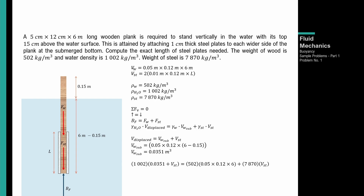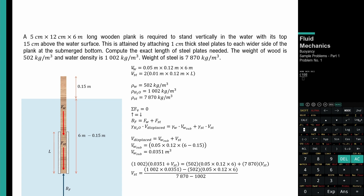Substitute natin. Yung mga unit weight ay rho times g. Lahat naman ng terms may acceleration due to gravity, so tinanggal na natin — divide all sides by g. Density ng water times volume displaced (0.0351 plus volume ng steel) equals weight ng wood plus weight ng steel. So gamitan lang ng konting algebra — subtract both sides ng 502 × 0.05 × 0.12 × 6, tapos divide yung coefficient ng volume ng steel, which is 7870 minus 1002. Therefore: 1002 × 0.0351 minus 502 × 0.05 × 0.12 × 6, over 7870 minus 1002.